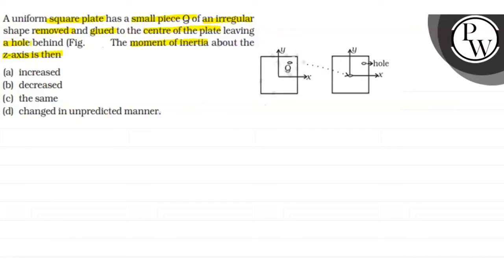Here in the question, we have a square plate which is uniform. It means mass density is uniform, and there is a small piece Q, which means it is like a hole.